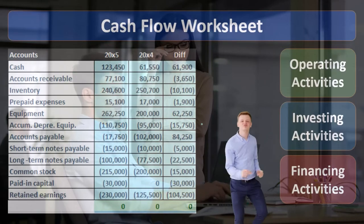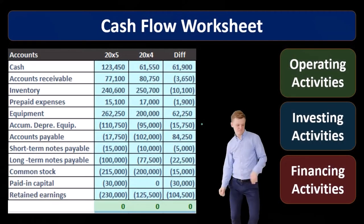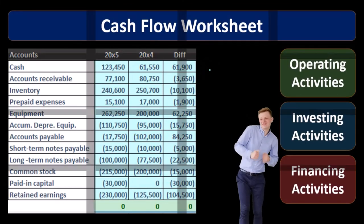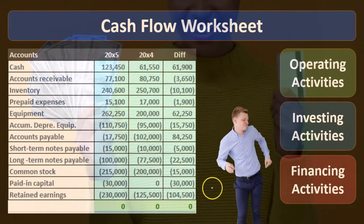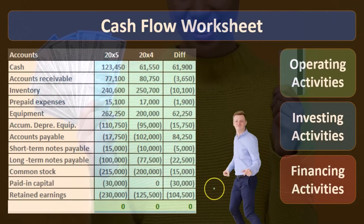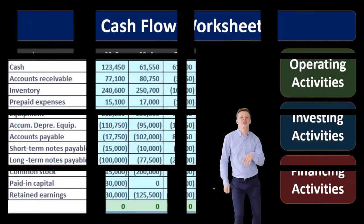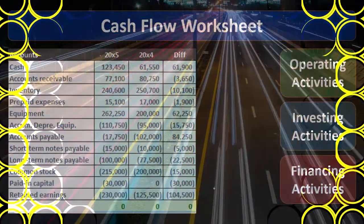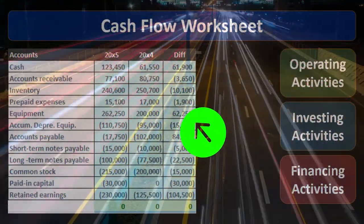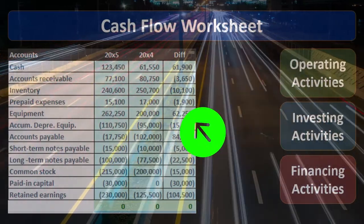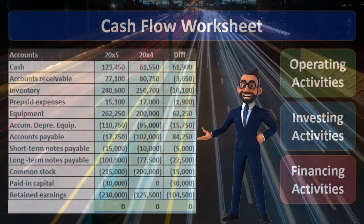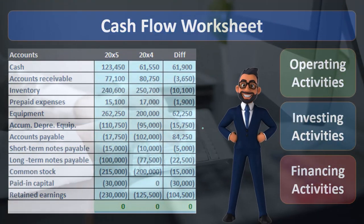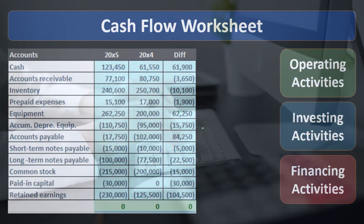So the tools we'll need are: a balance sheet for two time periods — the prior period and the current period — which we use to create a worksheet such as this. We also need an income statement to give us more detail about some of these changes in the numbers, more of the story. And then additional information — in a book problem they'll just give it to us; in real life, we would go through the changes and verify them by looking at the general ledger and any additional information needed to confirm a couple of numbers as we complete the cash flow statement.